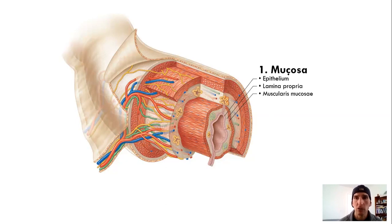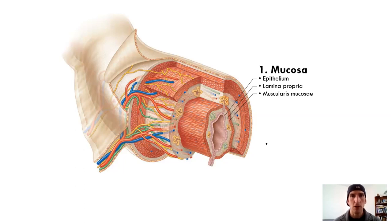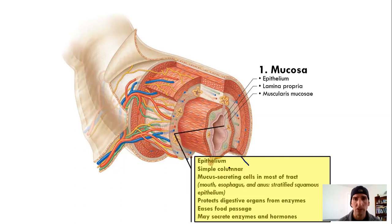The mucosa. We're going to talk about the epithelium, the lamina propria, and the muscularis mucosae layer — three features to talk about. Knowing that the digestive system involves a lot of secretion, absorption, and self-protection, what type of epithelial lining would you anticipate makes up the majority of the alimentary canal? The epithelium is, for the most part, going to be simple columnar epithelial cells, because they're going to have a lot of secreting opportunities throughout the length of the tract.